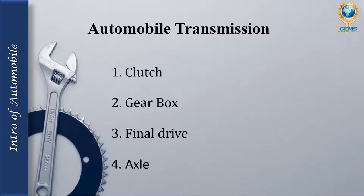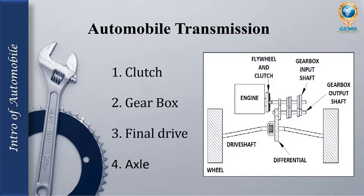In the automobile transmission chapter, we will cover four categories. First, clutch — including single plate clutch, multi-plate clutch, centrifugal clutch, and cone clutch. Second, gearbox — including synchromesh gearbox and sliding gearbox. Third, final drive — including propeller shaft and differential. Fourth, axle — rear axle, front axle, and stub axle. A diagram shows the engine, wheel, differential, gearbox, input shaft, flywheel, and clutch arrangement in automobile transmission.